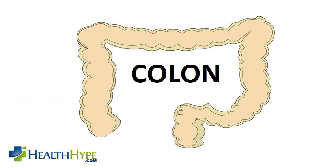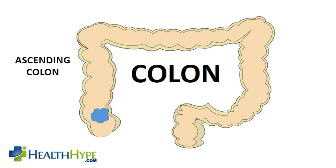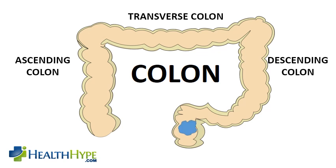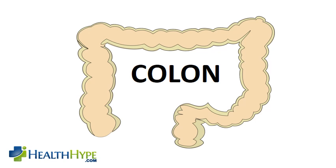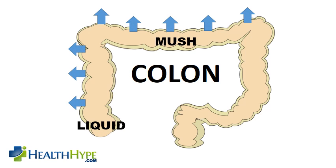We can understand normal stool formation and diarrhea stool by looking at what happens within the colon of the large intestine. A fluid mixture known as chyme enters the colon to travel along its course until it reaches the rectum and is passed out as stool. Water is pumped out of the colon and the mixture is transformed from liquid into mush. As it travels further along the colon with more water being pumped out, soft but firm stool finally reaches the rectum.